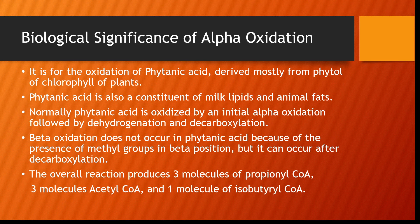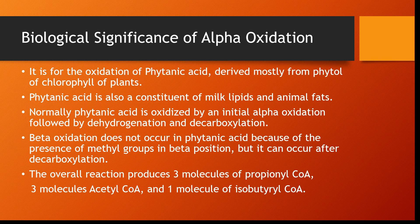The significance of alpha oxidation is that it is for the oxidation of phytanic acid derived mostly from phytol of chlorophyll of plants — phytol which is present in plant food. This phytanic acid is also a constituent of milk lipids and animal fats. Normally, phytanic acid is oxidized by initial alpha oxidation followed by dehydrogenation and decarboxylation. Beta oxidation does not occur in phytanic acid because of the presence of methyl groups in the beta position, but it can occur after the decarboxylation step provided by alpha oxidation.